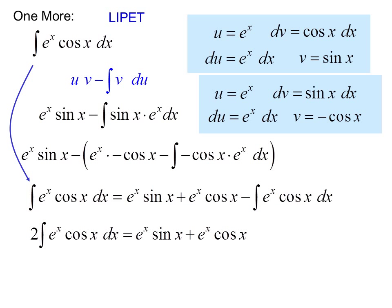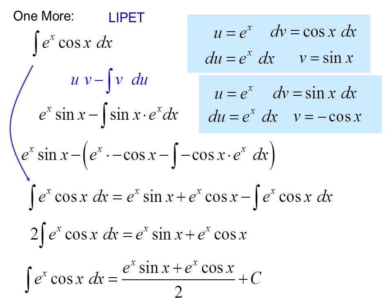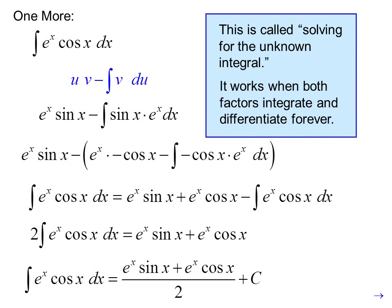We move our original expression to the front: the integral of eˣ cosine x dx equals eˣ sine x plus eˣ cosine x minus the integral of eˣ cosine x dx. Moving this integral to the left-hand side, we get 2 times the integral of eˣ cosine x dx equals eˣ sine x plus eˣ cosine x. Dividing both sides by 2 and adding C, our answer is (eˣ sine x plus eˣ cosine x)/2 plus C. This is called solving for the unknown integral, and it works when both factors integrate and differentiate forever.